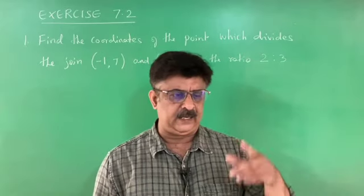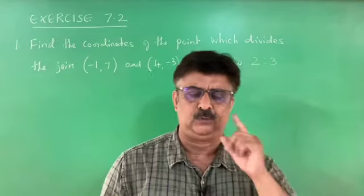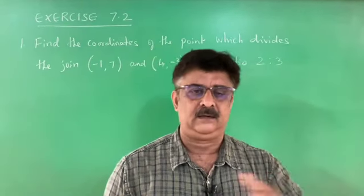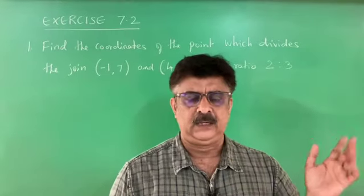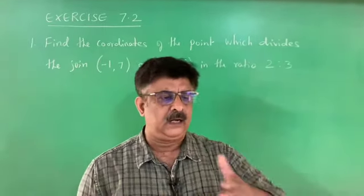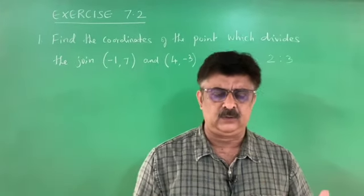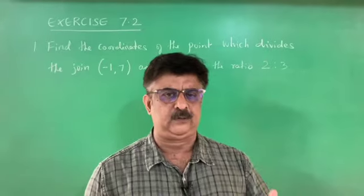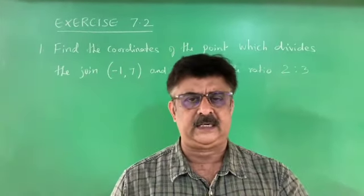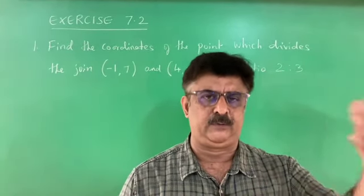Similarly, y equals m1·y2 plus m2·y1, divided by m1 plus m2. The extension of this section formula is the midpoint formula: x equals (x1 plus x2) divided by 2, and y equals (y1 plus y2) divided by 2. The section formula is derived with the help of similar triangles. The derivation may not come in the public examination, but it is required for your future studies, so it is your duty to understand, learn, and practice the derivations.